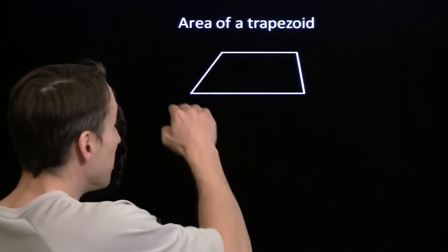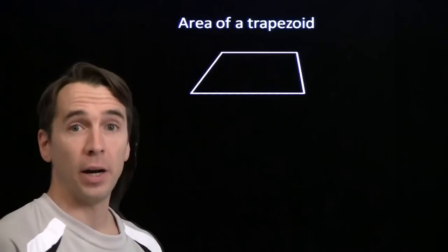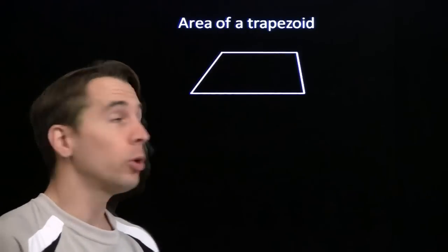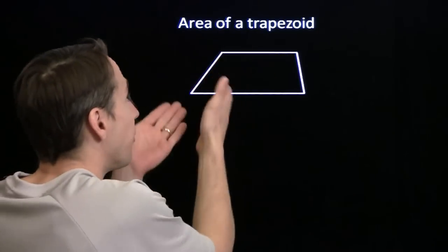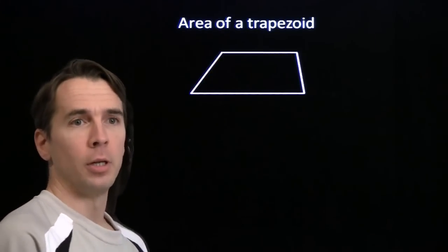We have a trapezoid here. That means two of the sides are parallel. And we're looking for a method for finding the area of a trapezoid.